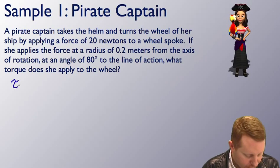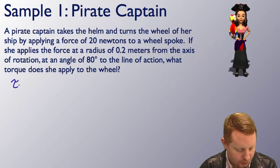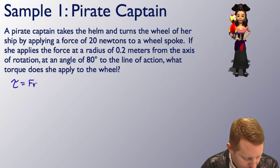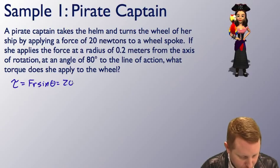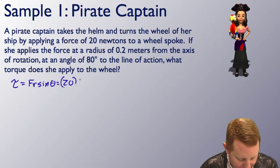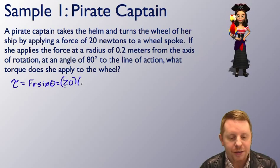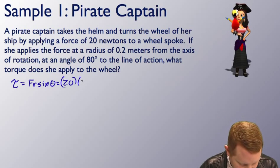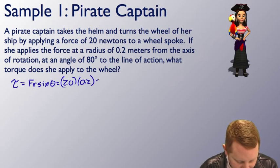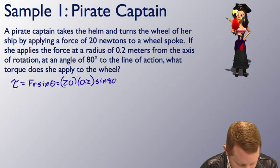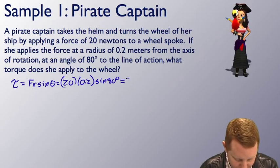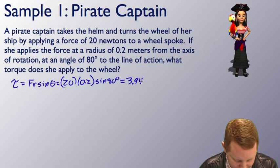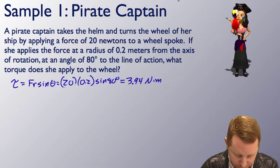Let's start by writing our magnitude of the torque vector equation, FR sine theta, where our force here is 20 newtons. Our position vector R, the distance over which it's applied, the lever arm, is 0.2 meters, sine 80 degrees. I put that into my calculator, and I come up with a torque of about 3.94 newton-meters.